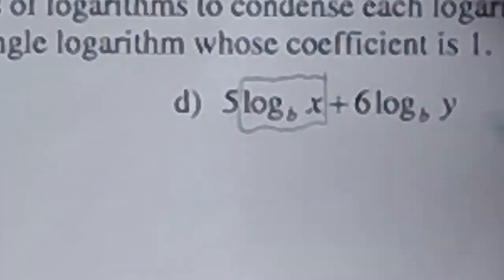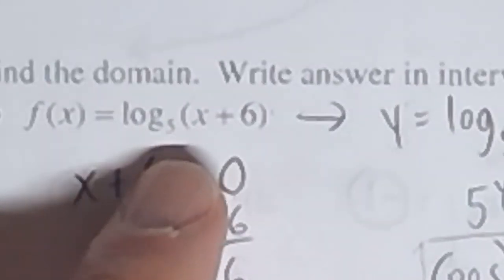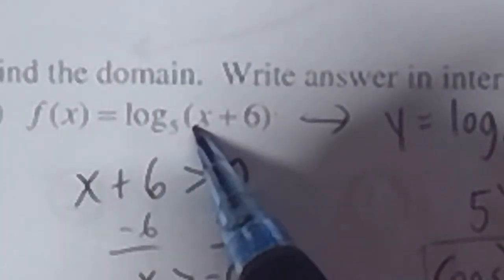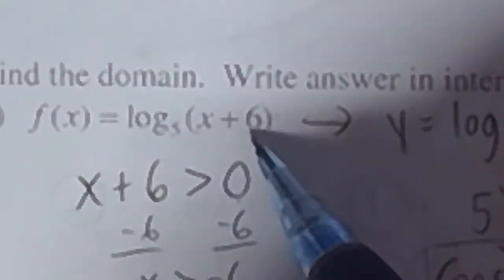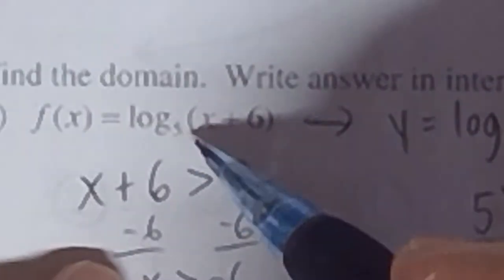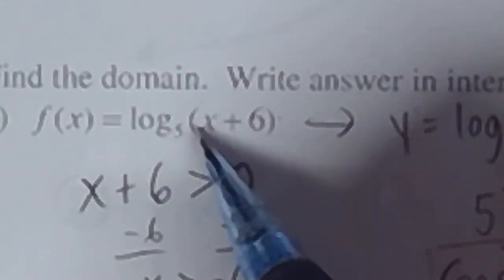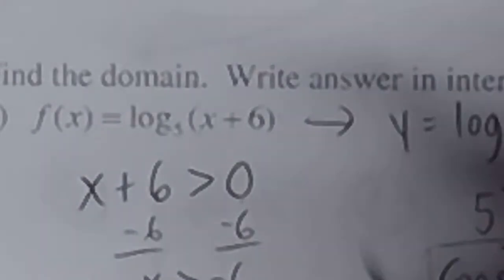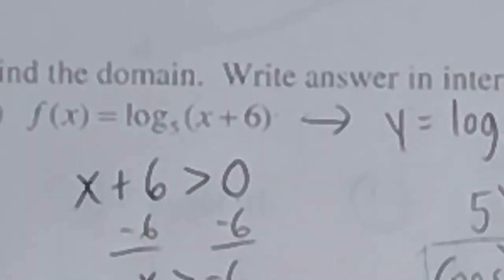This is as opposed to when you do have a parenthesis next to the base. When you have a parenthesis right next to the base, the entire parenthesis is your product term. So even though there's more than one term inside, the six is not separate. The parenthesis does make a big difference: without it, only X is your product term; with it, the entire parenthesis is your product term.